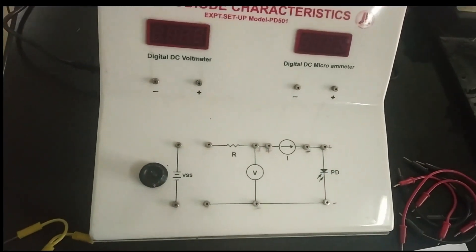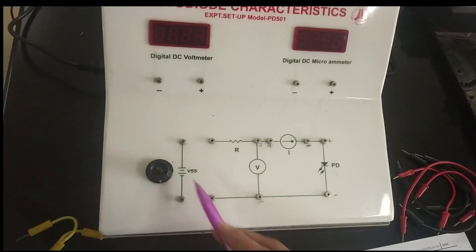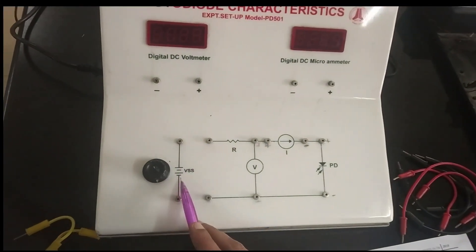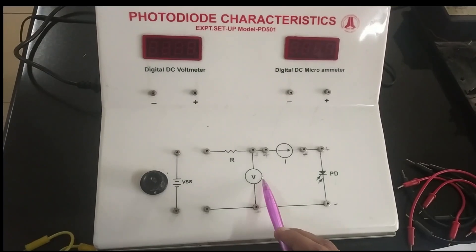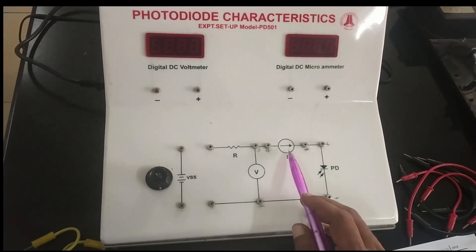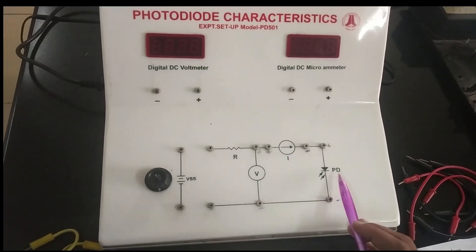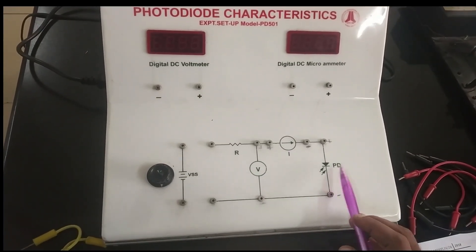This LED is connected to the power supply, and the same circuit is designed here in the experimental setup. This is the power supply, this is the voltmeter, this is the ammeter, and this is the photodiode.